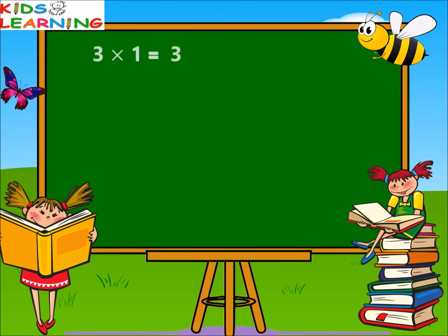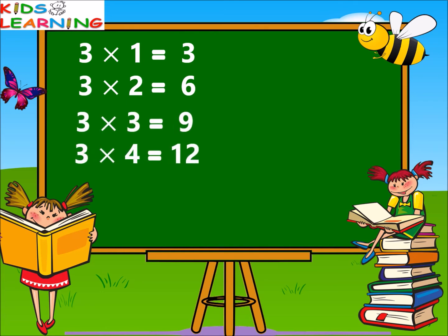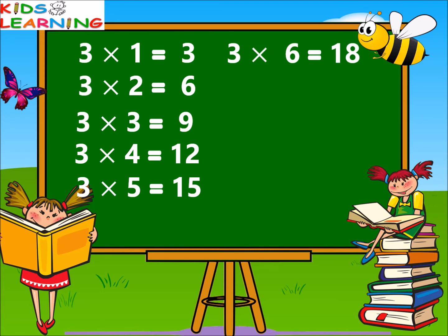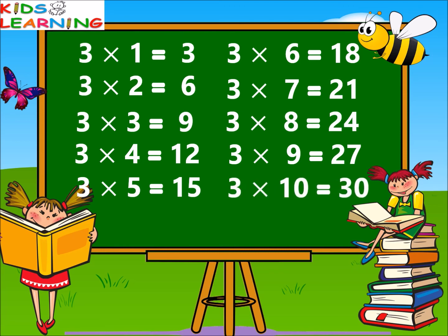Three ones are three. Three twos are six. Three threes are nine. Three fours are twelve. Three fives are fifteen. Three sixes are eighteen. Three sevens are twenty-one. Three eights are twenty-four. Three nines are twenty-seven. Three tens are thirty.